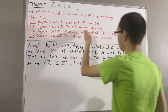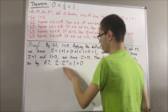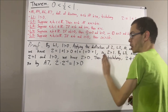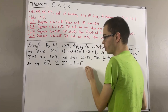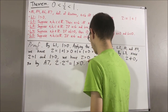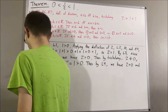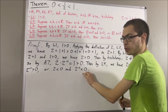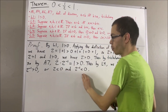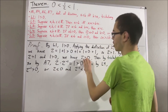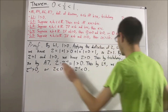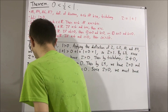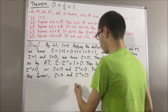Now we're in a position to apply L4. Since 2 times the reciprocal of 2 is greater than 0, L4 tells us that one of two things is true: either both 2 and the reciprocal of 2 are greater than 0, or both 2 and the reciprocal of 2 are less than 0. But 2 is greater than 0, so we can't have option 2 — that would require 2 to be both less than 0 and greater than 0, contradicting the trichotomy law. So we must have option 1: 2 is greater than 0 and the reciprocal of 2 is greater than 0. Therefore, the reciprocal of 2 is greater than 0.